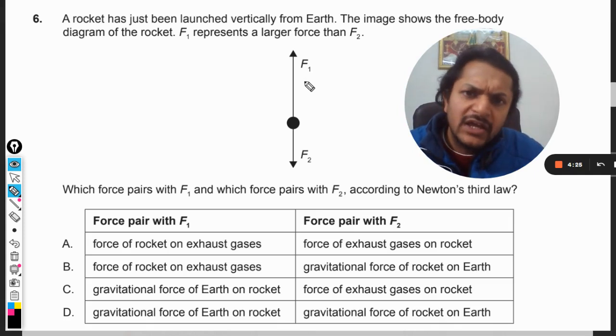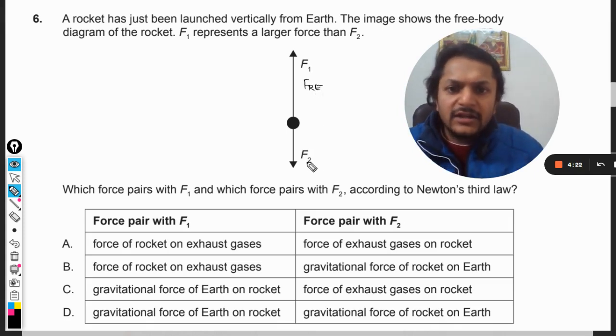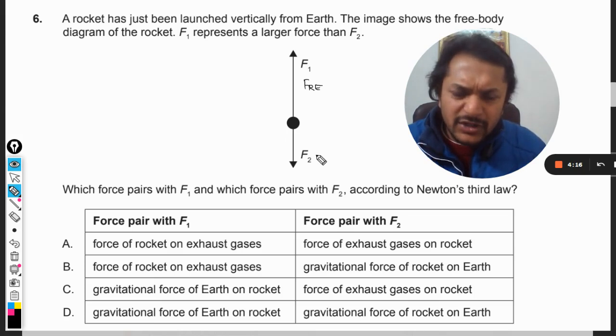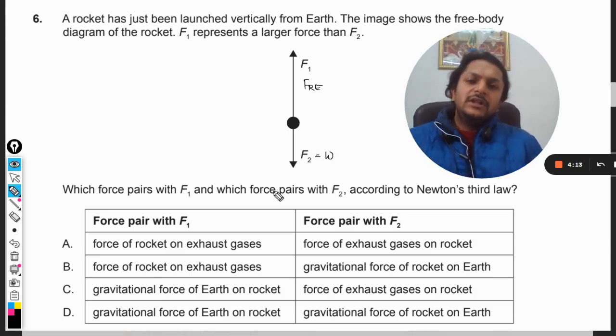Obviously this will be the force on the rocket due to the exhaust gases, and this will be the downward force when the rocket has been launched. Obviously this has to be equal to weight. So we are now supposed to find the reactionary forces for both of these forces.